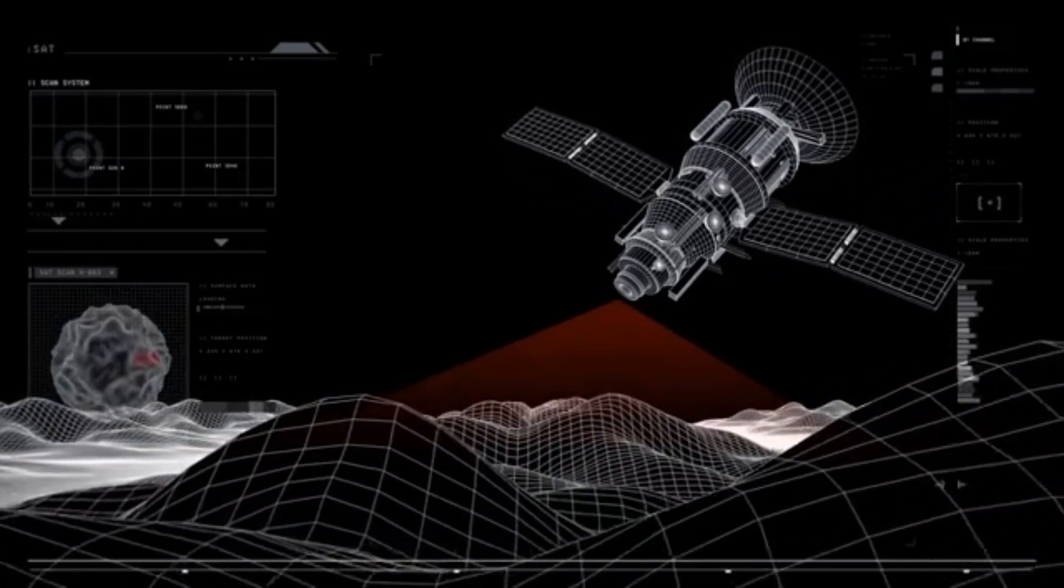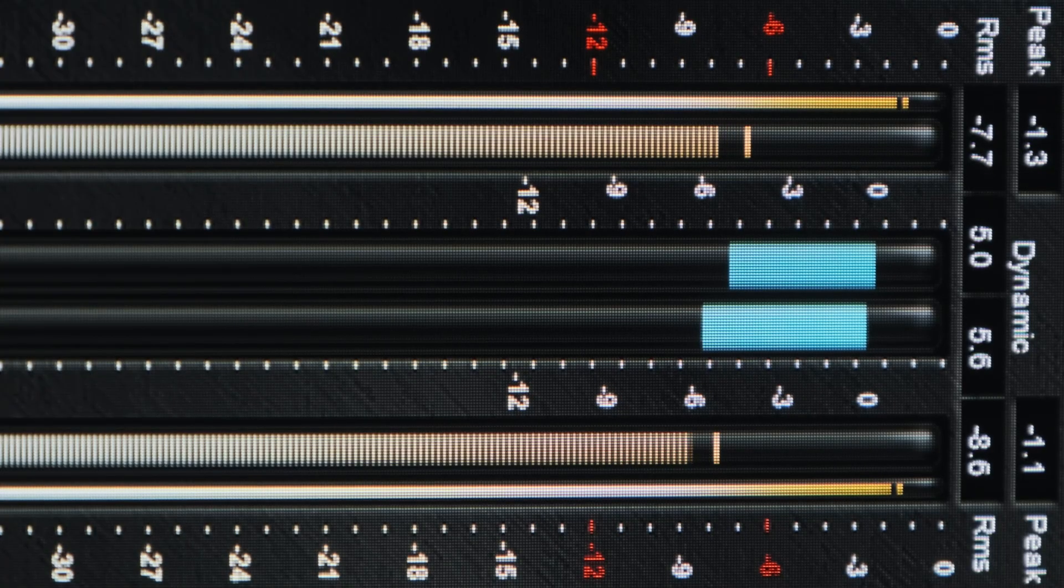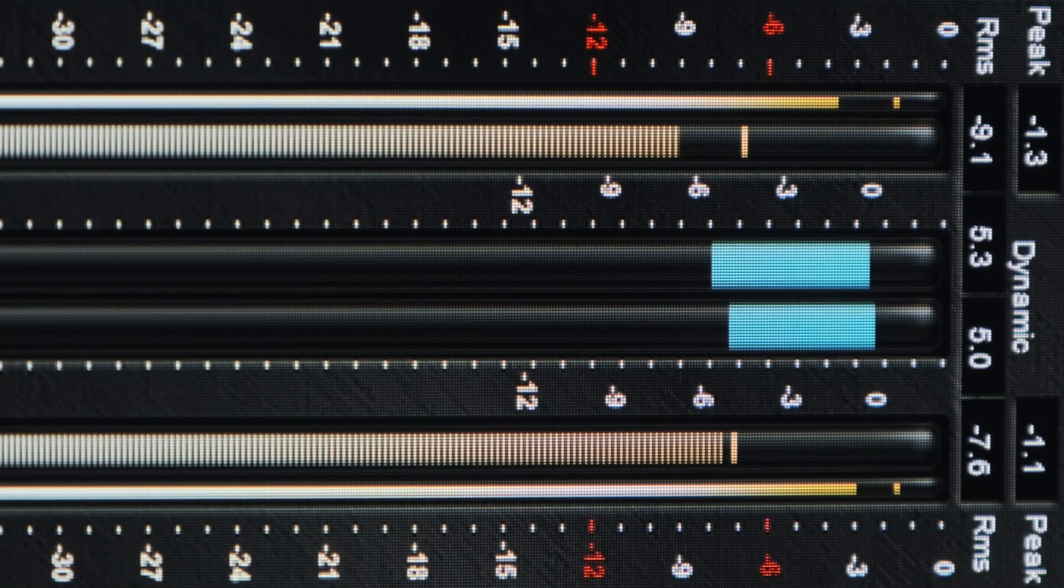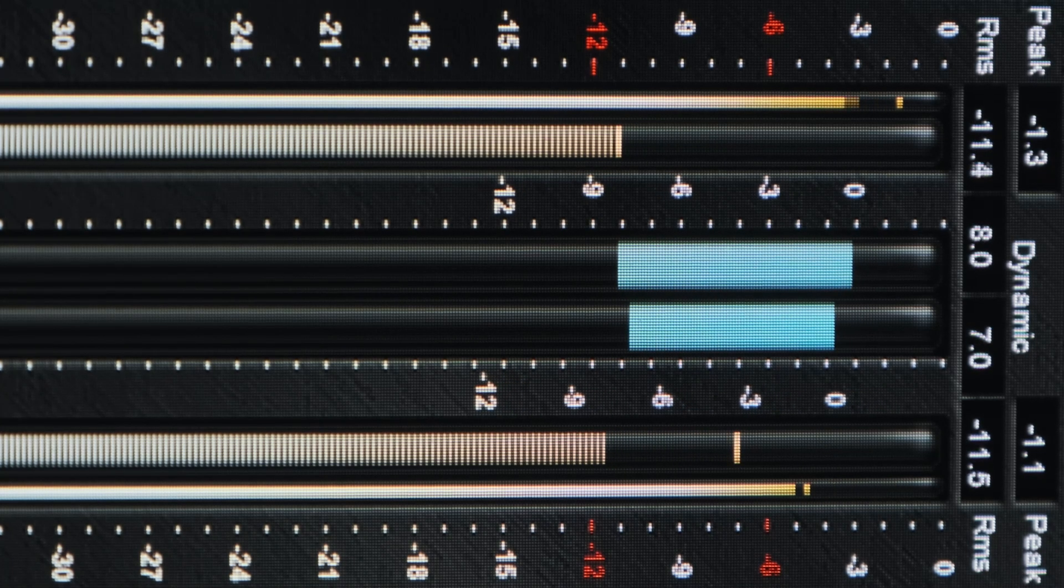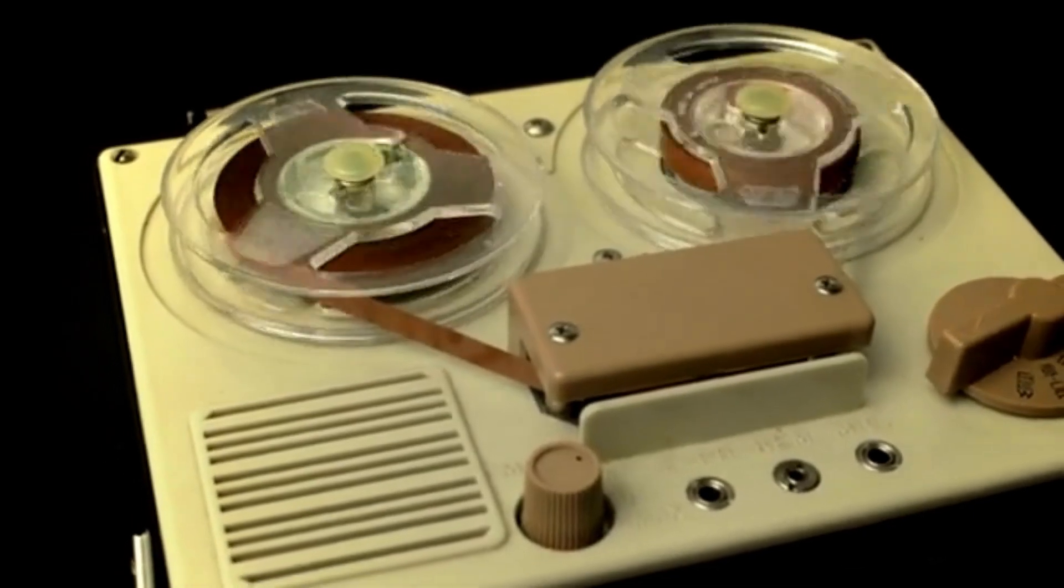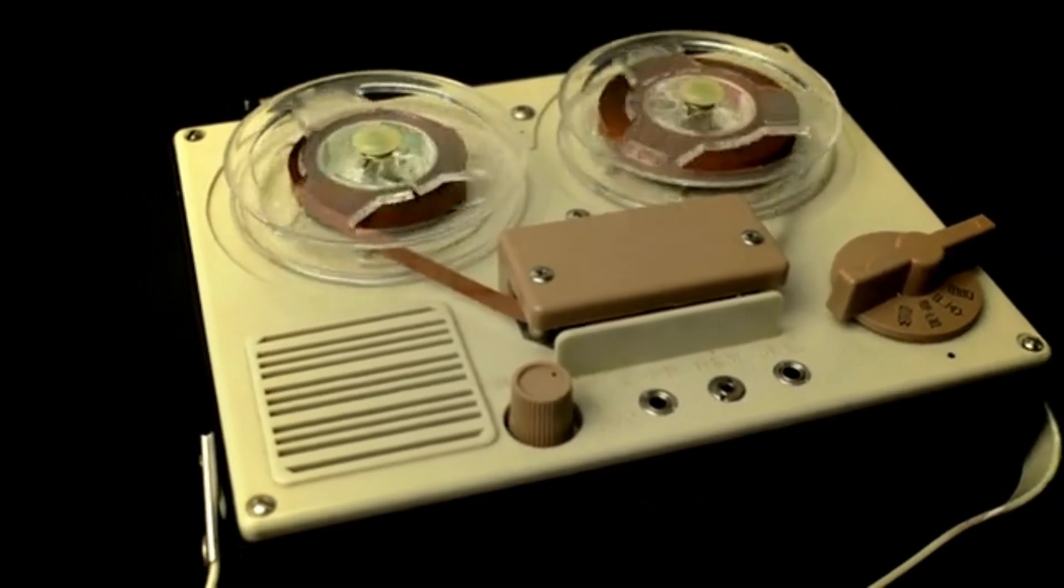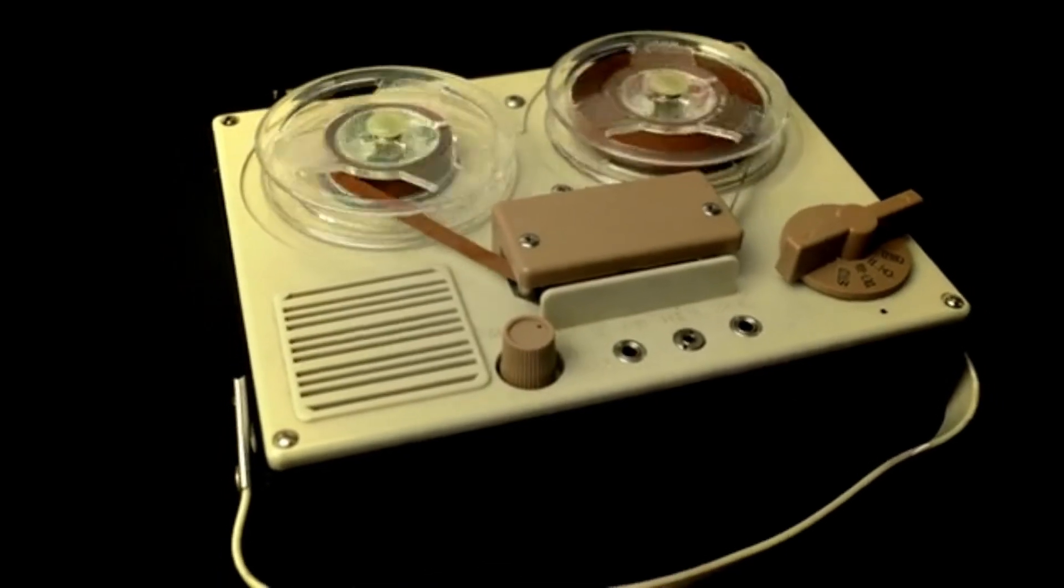Although Voyager 2 is running low on power and instruments are gradually being shut down, several are still operating. Each new transmission offers rare insights, reminding us that even technology from the 1970s can deliver discoveries that reshape our understanding of the universe.